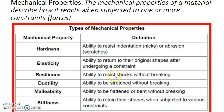Resilience is the ability to resist shocks without breaking — say you drop the stapler, you don't want it to break. Ductility is the ability to be stretched without breaking. Malleability is the ability to be flattened or bent without breaking. Stiffness is the ability to retain the shape — once we've created a metal frame for, say, glasses or a stapler, we don't want it to change shape.